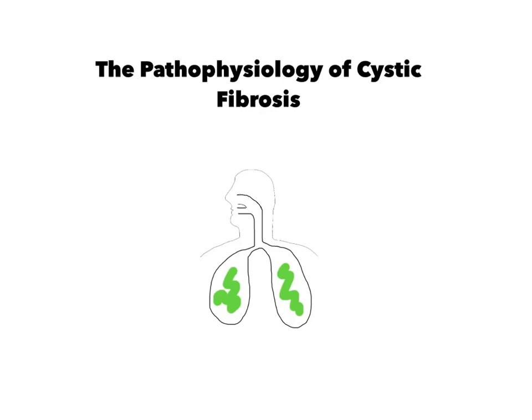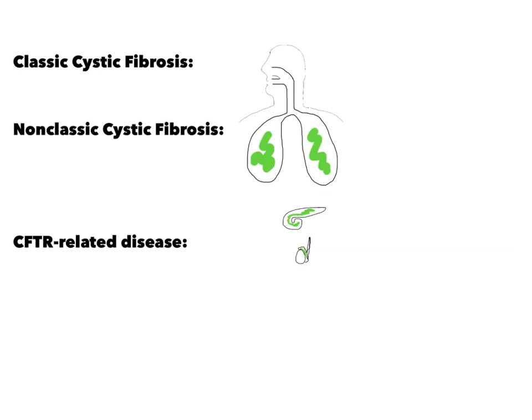Cystic fibrosis can be broken down into three broad categories. First is classic cystic fibrosis, which is the most common. It includes involvement of one or more organ systems, including the lungs, pancreas, and in males, the epididymis.